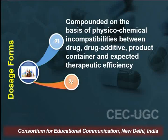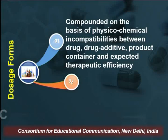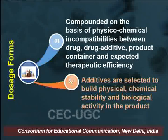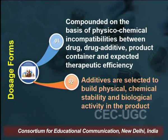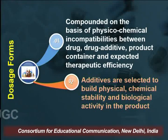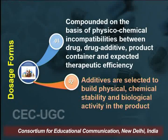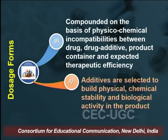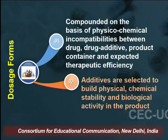Dosage forms are basically intended for compounding drugs based on their physico-chemical incompatibilities between the drugs, drug additives, product container, and expected therapeutic efficiency. The additives selected are chosen based on building a product which is physically, chemically, and biologically stable.